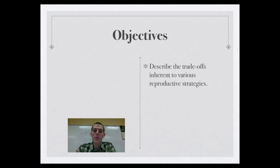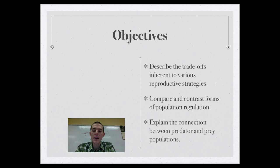So let me get you your objectives, and we'll get going. Three things that I need you to know or be able to do by the end of this video. First, to describe the tradeoffs inherent to various reproductive strategies. Second, compare and contrast forms of population regulation. And finally, explain the connection between predator and prey populations. So basically today we're talking about how populations grow and shrink and strategies that animals have to reproduce under certain conditions.